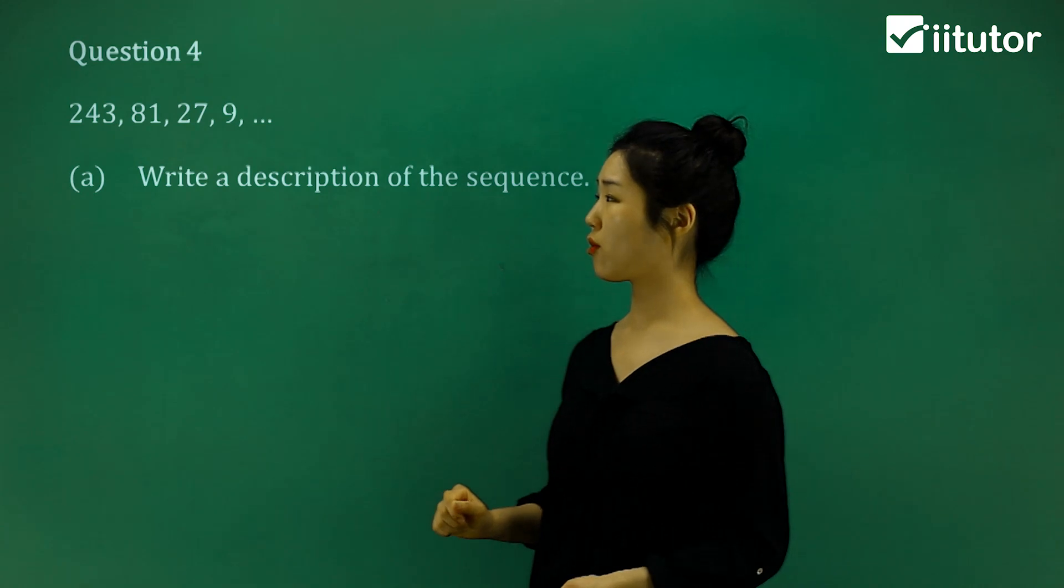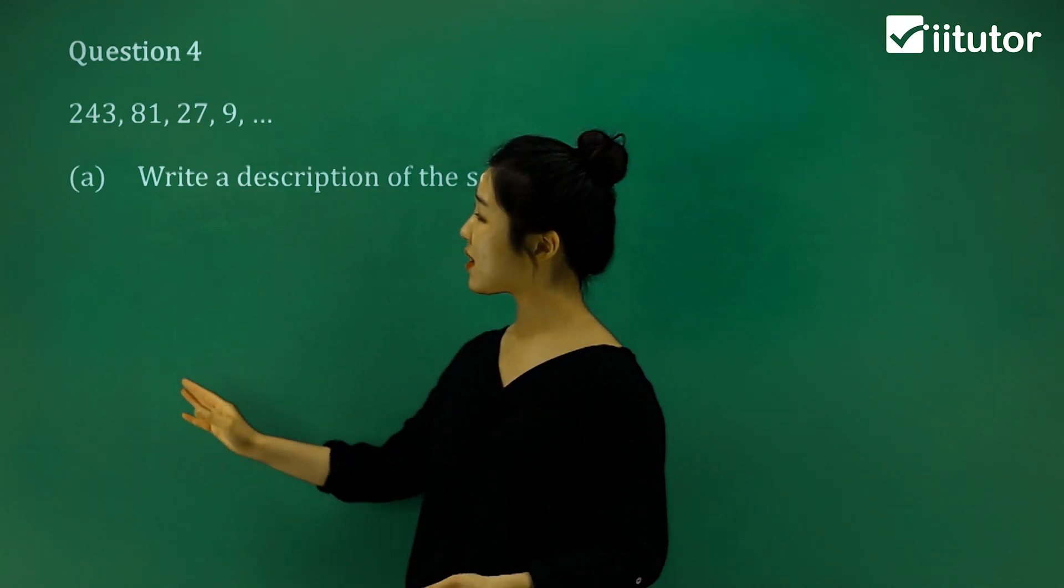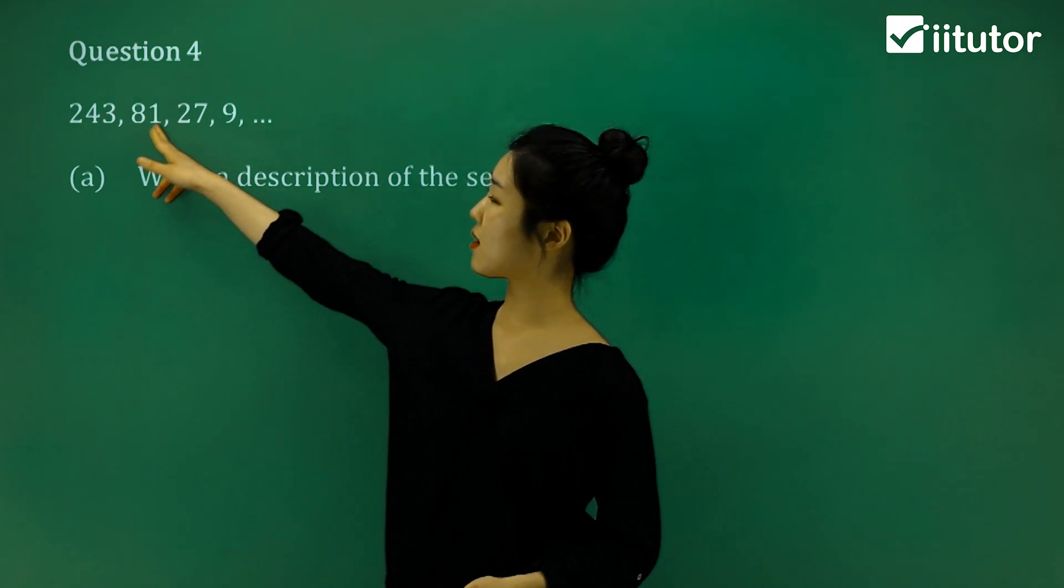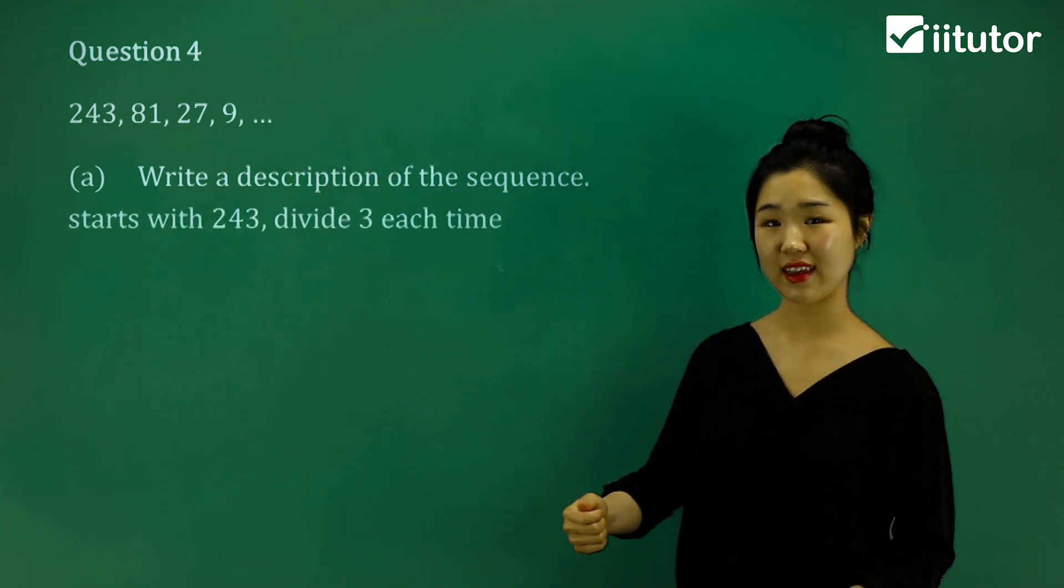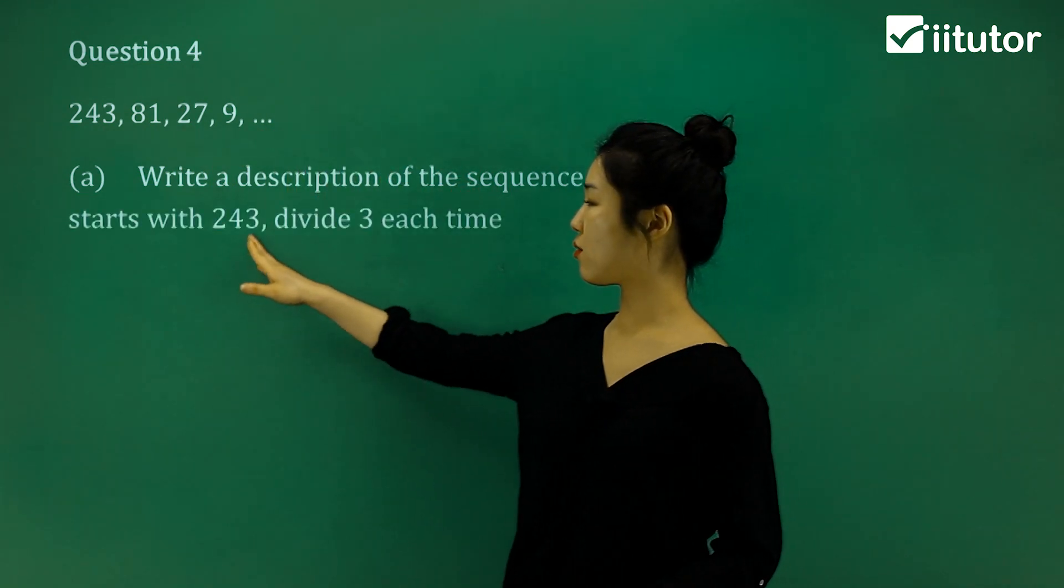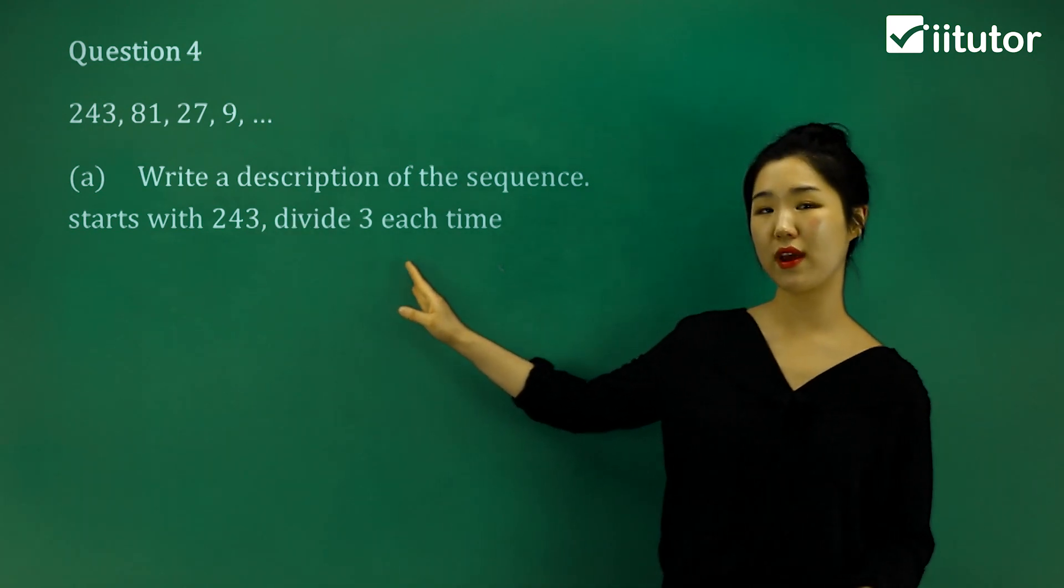I know that 243 divided by 3 is 81. 81 divided by 3 is 27. 27 divided by 3 is 9. You can see the pattern, right? It's dividing. So it starts with 243 and it divides by 3 each time.